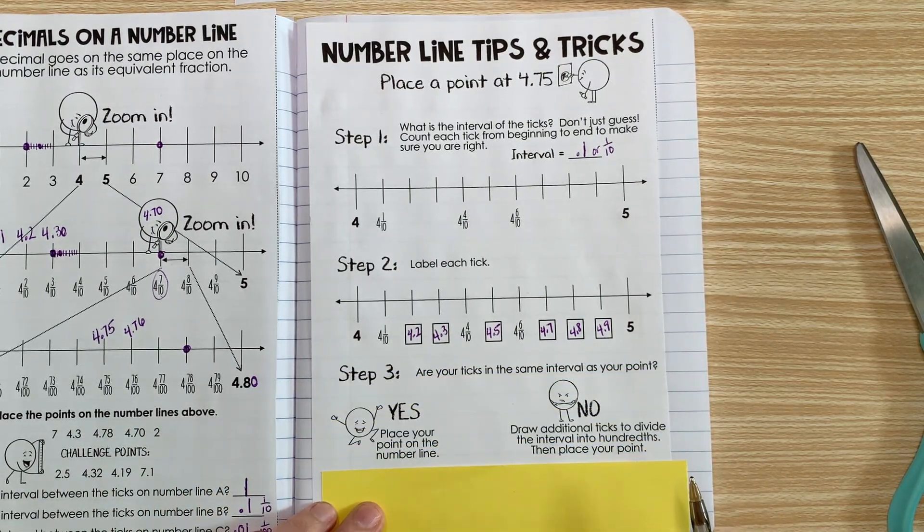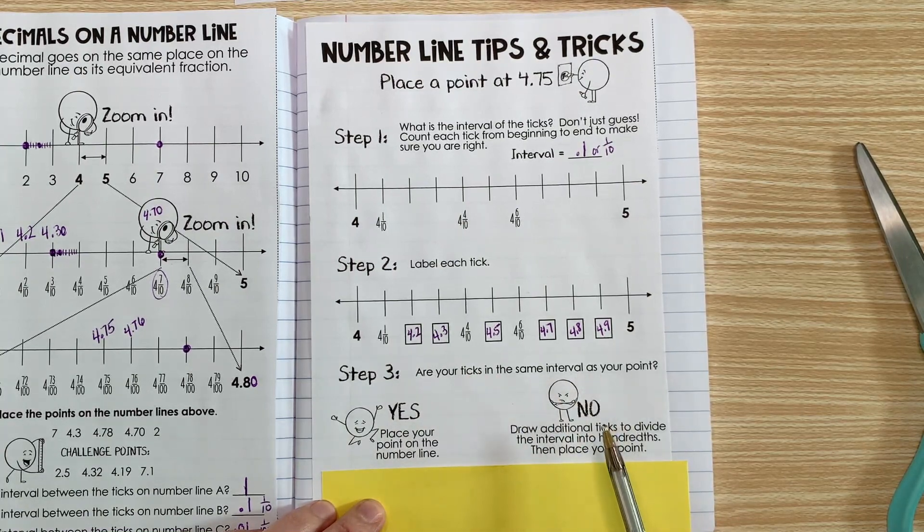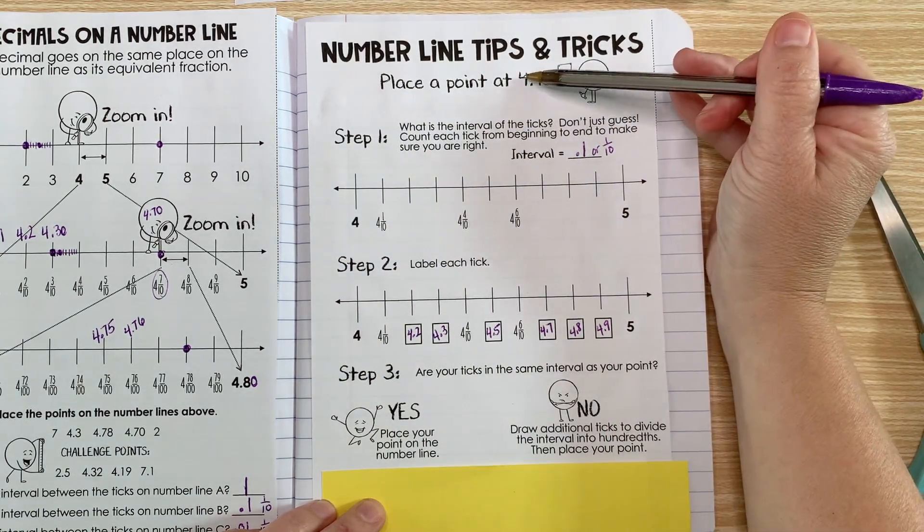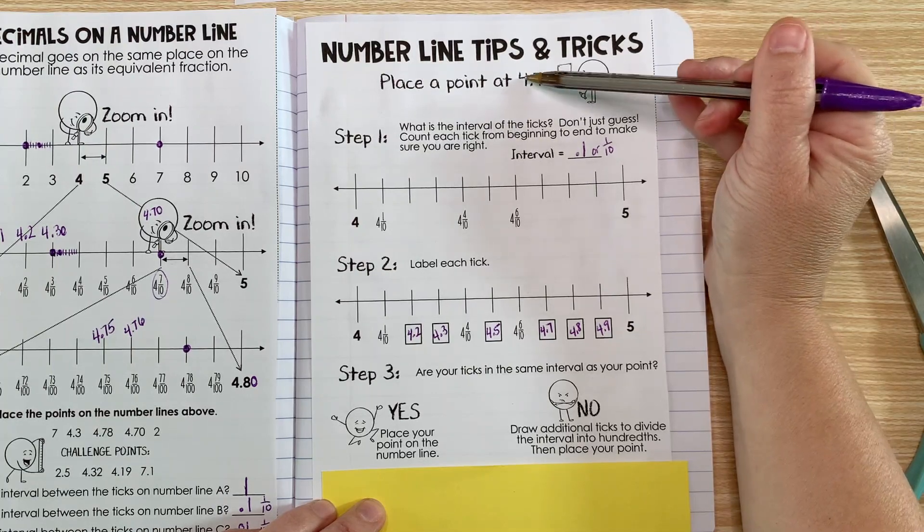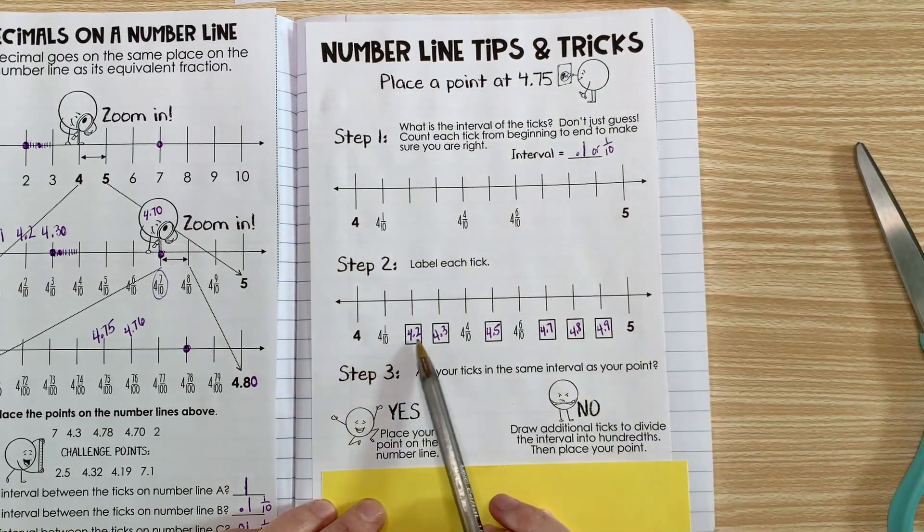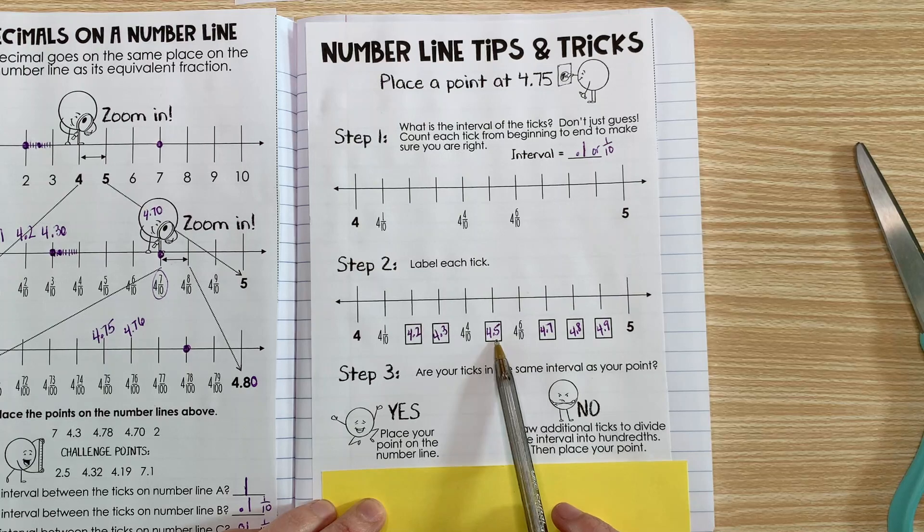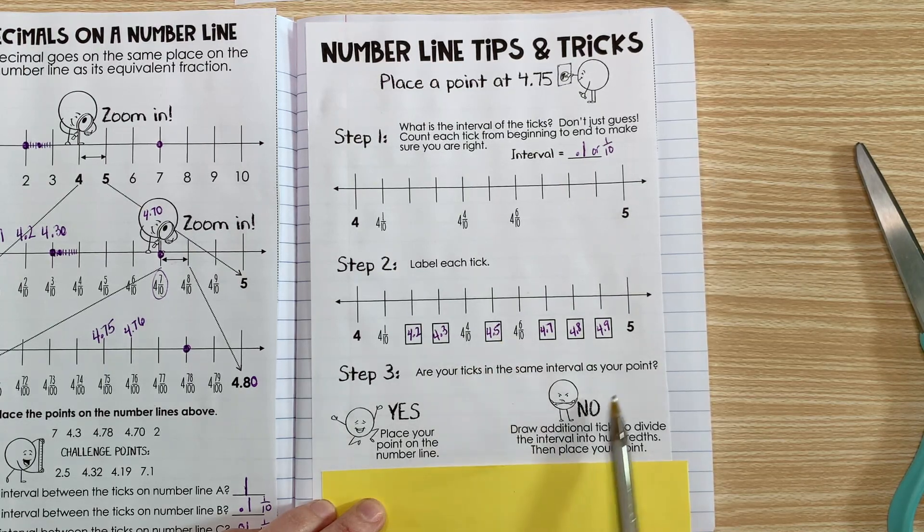Step three: are your ticks in the same interval as your point? What does that mean? Here we're looking at our point at 4.75. This number goes to the hundredths. So far we only labeled to the tenths, not the hundredths. It's like having dimes and not pennies, so they're not the same.